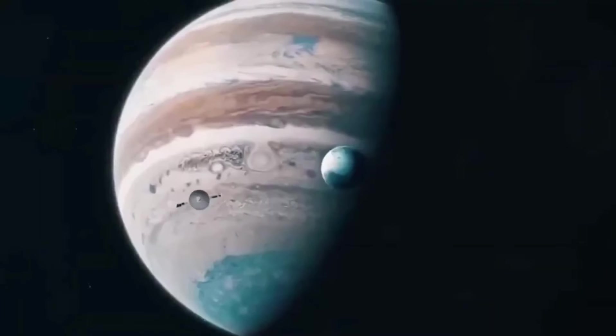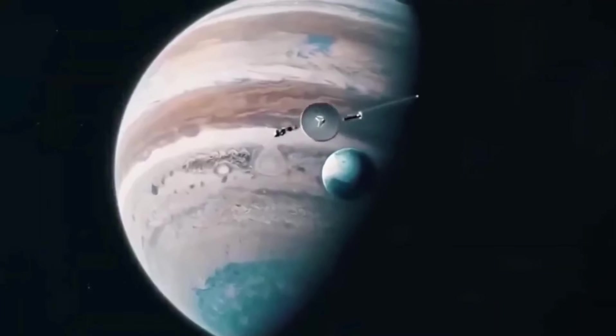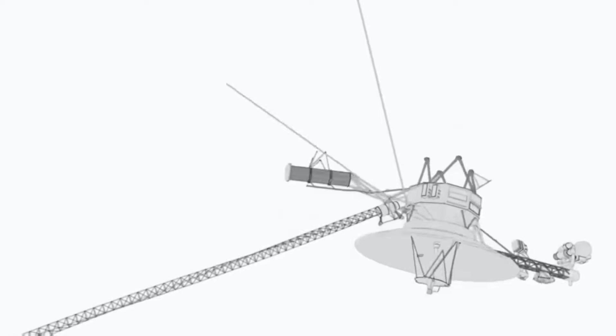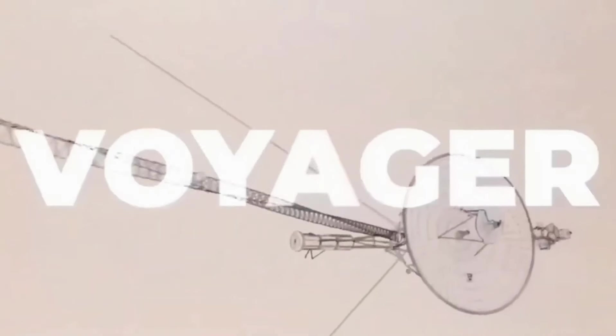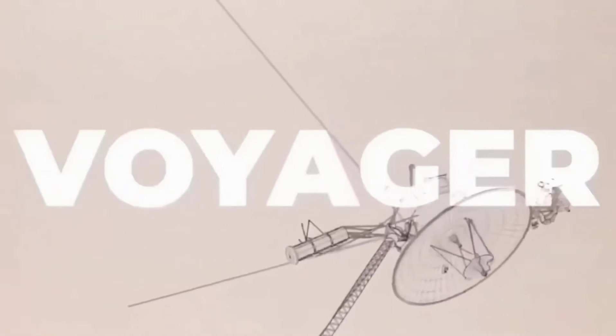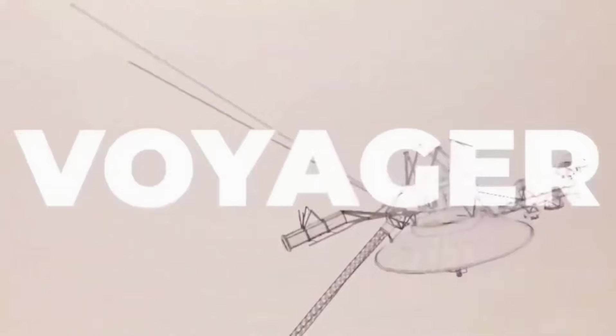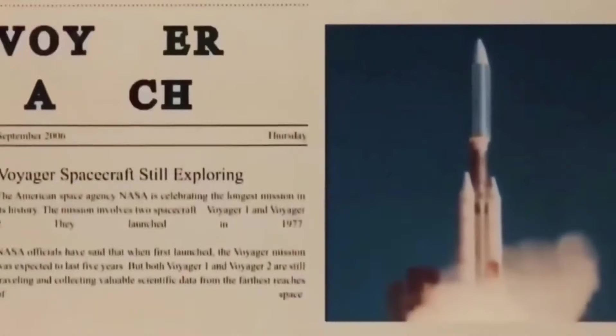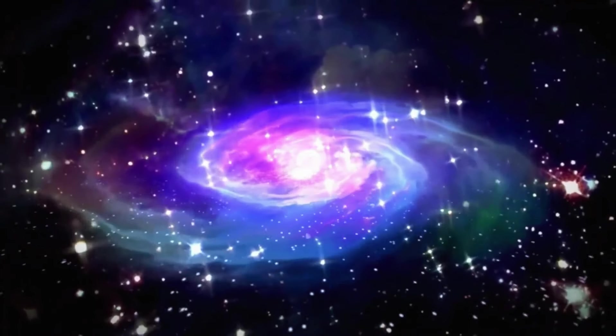In November 2018, Voyager 2 arrived at the interstellar seashore, but did not notice any magnetic field changes. When the spacecraft reached the heliopause at 120 AU from Earth, the same distance reached by its twin six years earlier, it added still another riddle.